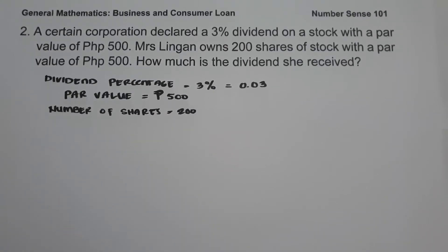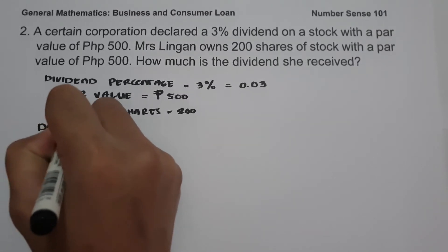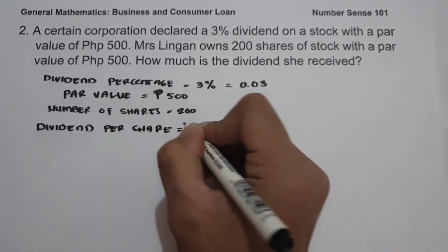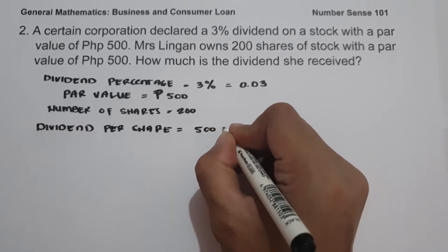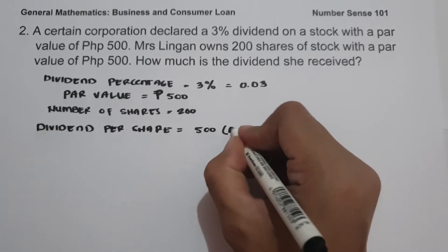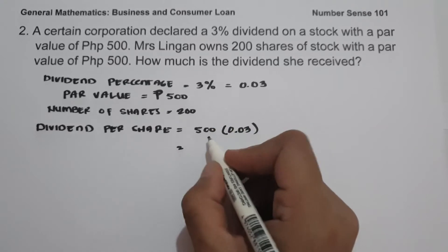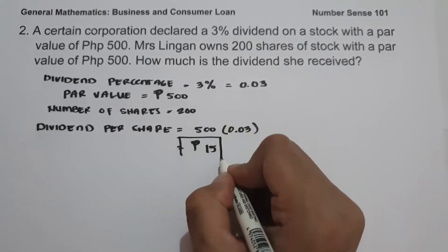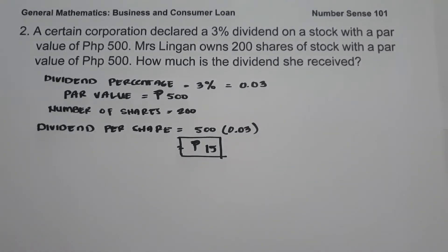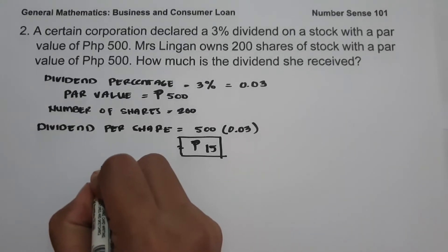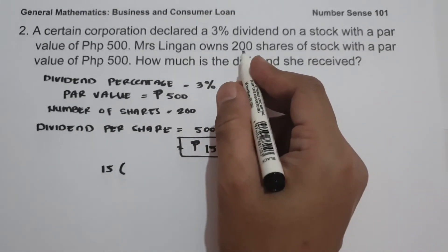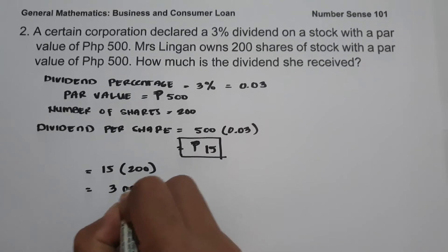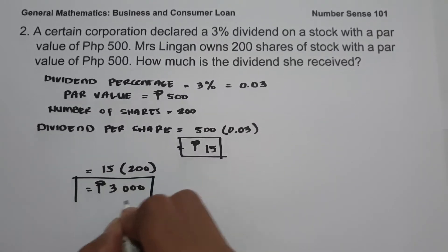To determine the dividend, here is the first solution. First, let us find the dividend per share: that is 500 multiplied by the dividend percentage 0.03, which gives us 15 pesos per share. Since Mrs. Lingan owns 200 shares, we multiply 15 by 200, which gives us 3,000 pesos. So this will be the amount of dividend she received.